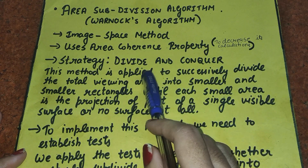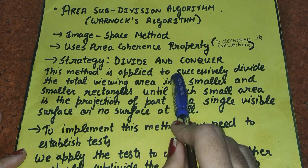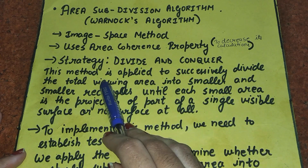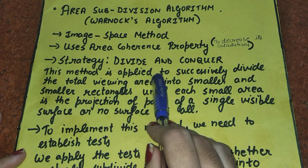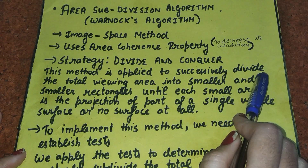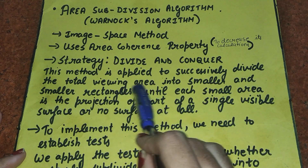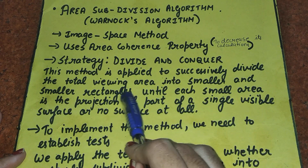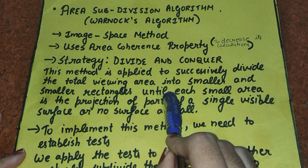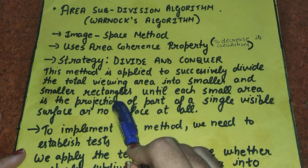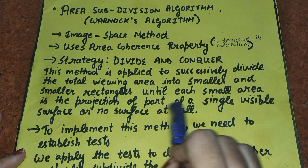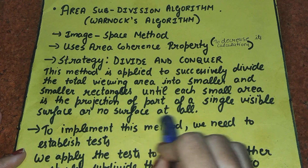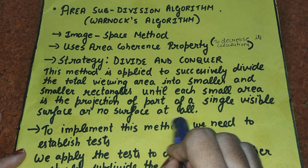The strategy of this algorithm is divide and conquer. This method is applied to successively divide the total viewing area into smaller and smaller rectangles until each small area is the projection of part of a single visible surface, or no surface at all.